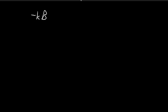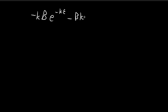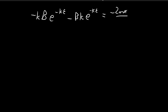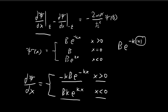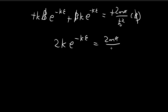When we substitute positive epsilon, since epsilon is larger than 0, we substitute into the first expression and get negative k times b times e to the power of negative k epsilon. For negative epsilon, which corresponds to x smaller than 0, we substitute into the second expression and get b times k times e to the power of k times negative epsilon. This equals the right-hand side: negative 2m alpha divided by h-bar squared times xi of 0, which is just b. The b's cancel out, and we can factor out the negative sign, giving 2k times e to the power of negative k epsilon equals 2m alpha divided by h-bar squared.